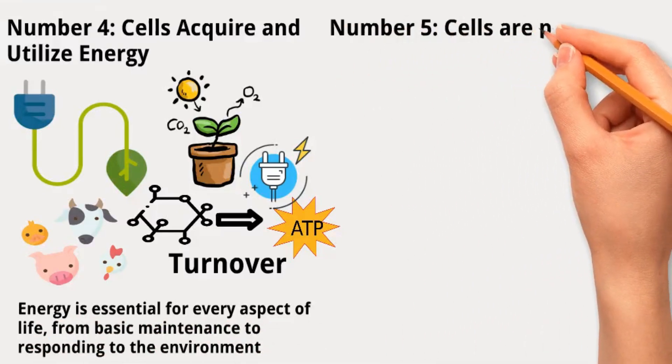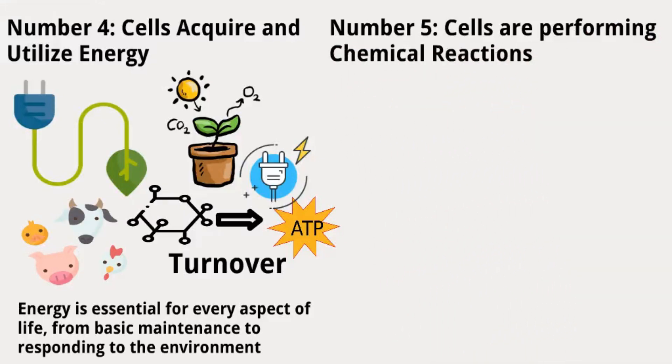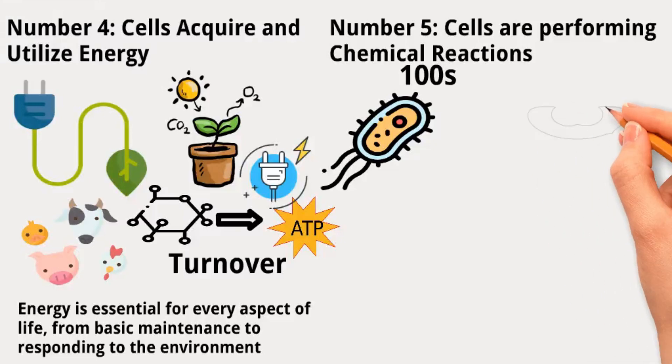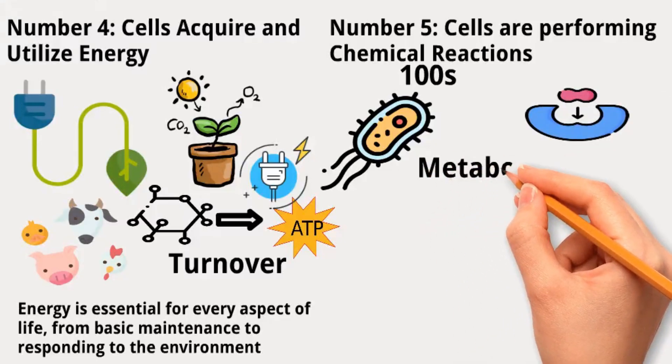Number 5: Cells are performing chemical reactions. Cells are like tiny chemical factories. Even the simplest cells can perform hundreds of different chemical reactions, which are mostly sped up by special molecules called enzymes. All of a cell's chemical reactions together are called its metabolism.